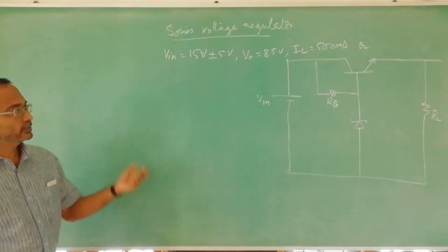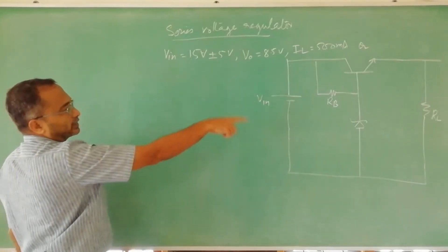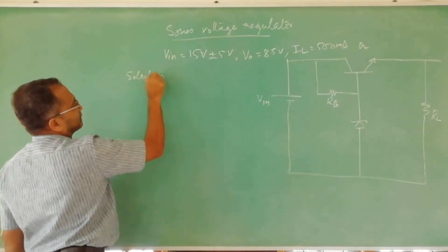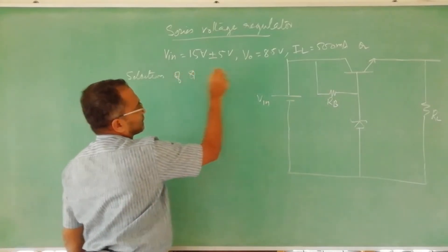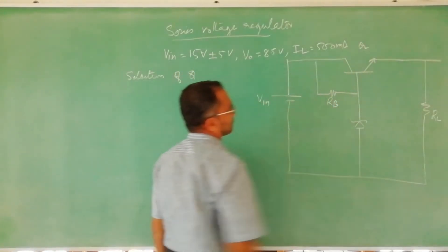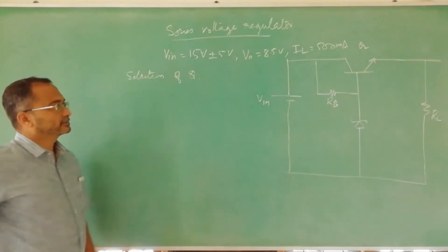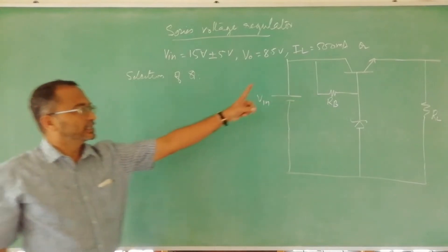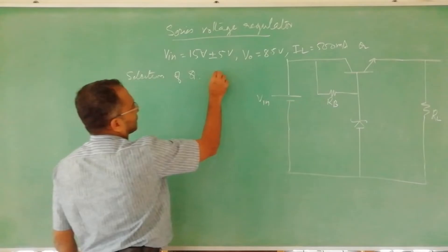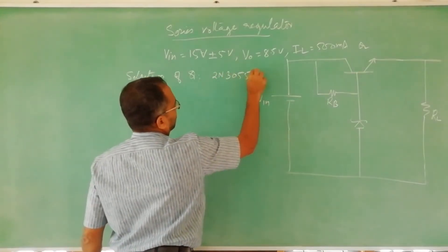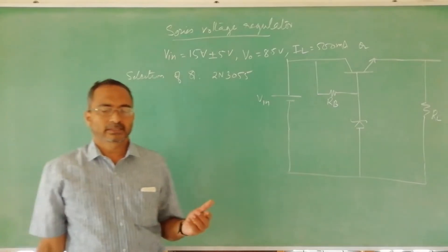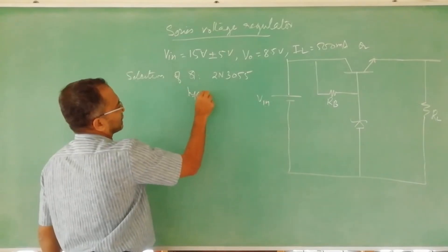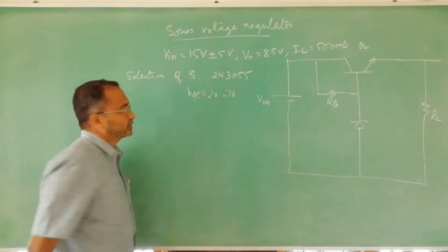First, we decide upon the active elements — selection of transistor Q. The major criteria is current: 500 milliamperes, and it is an NPN transistor. We shall select the 2N3055. Referring to its datasheet, we find HFE is 20 to 70.